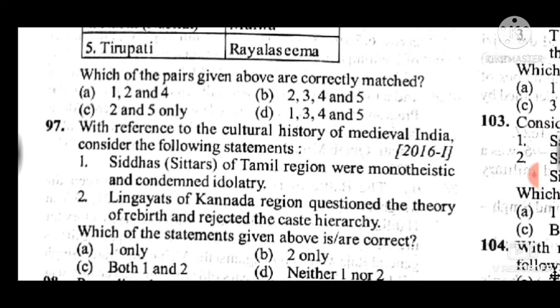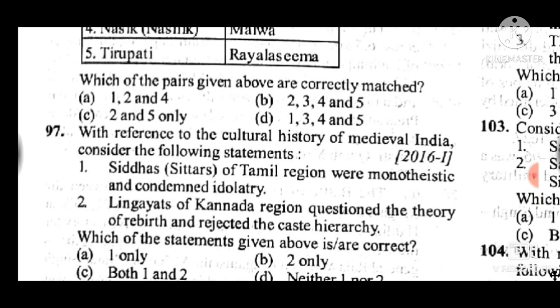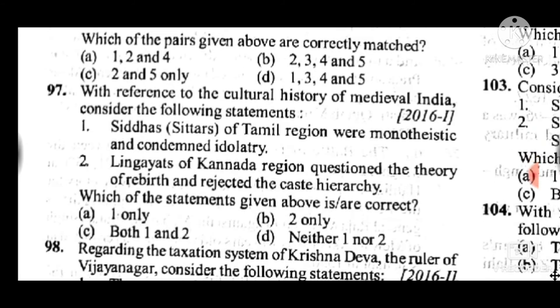Question 97: With reference to the cultural history of medieval India, consider the following statements. Answer to question 97 is C: both statements 1 and 2 are correct. Siddhas of the Tamil region were monotheistic and condemned idolatry. Second statement: Lingayats of the Karnataka region questioned the authority of rebirth and rejected the caste hierarchy.